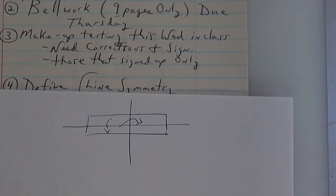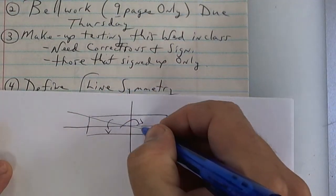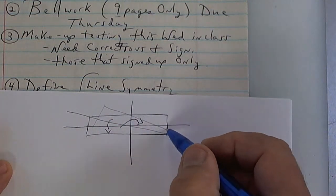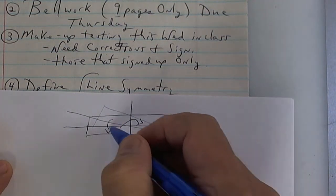You cannot fold it on the corners because when you do, this side comes up here and this other side goes down here and that's not a reflection.